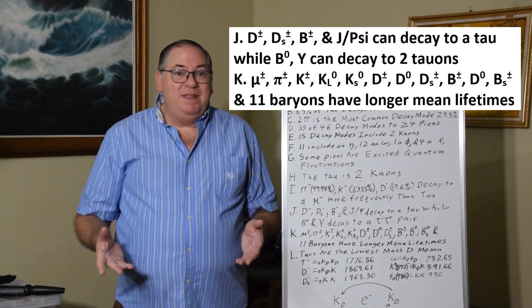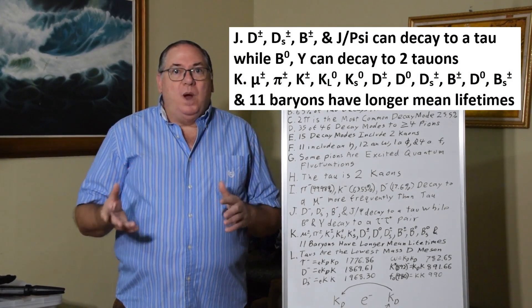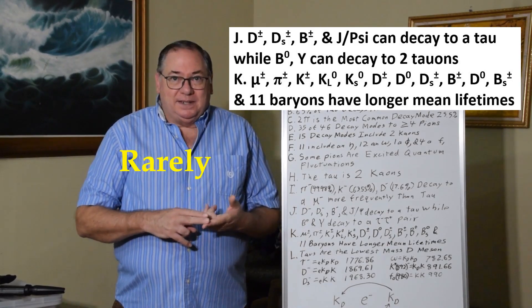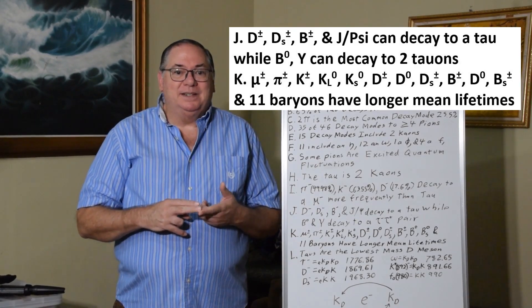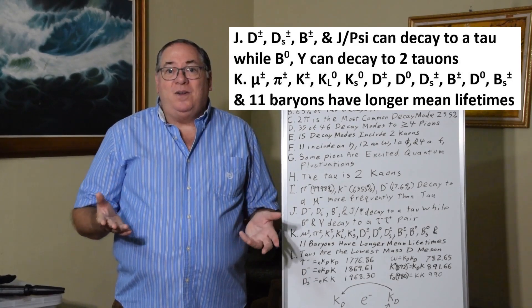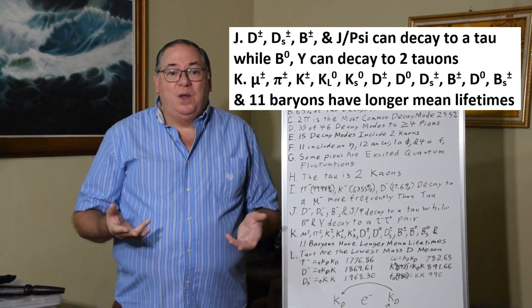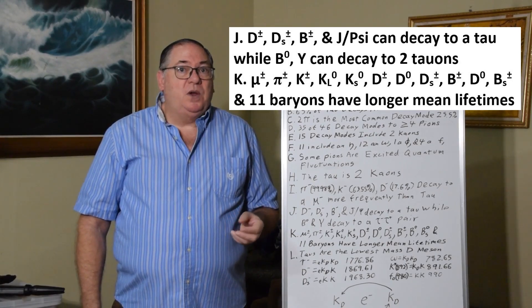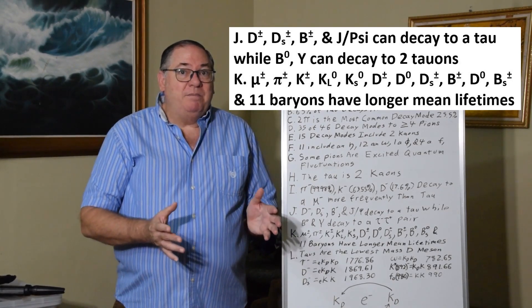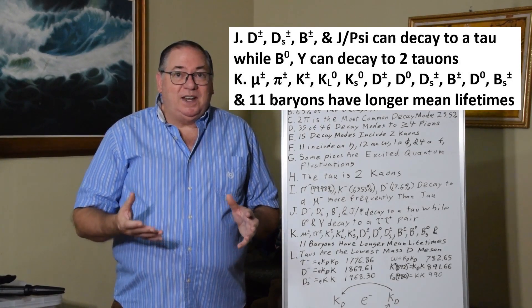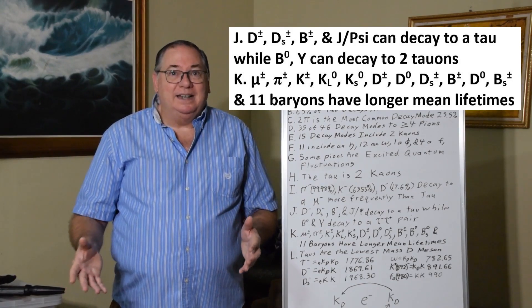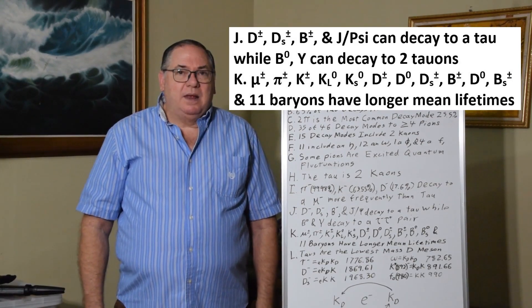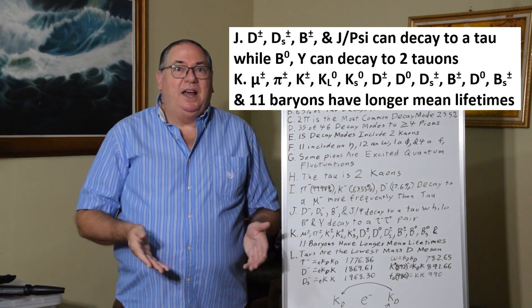Now, we also can look at it the other way around. That what other particles decay to a tau. A D meson, a strange D meson, a B meson, a J psi, all can decay to a tau, while a B or an epsilon can decay to two taus. So, taus can come from mesons, which means a tau like resonances inside some of these mesons, or they're related in some way. Which, once again, strongly suggests that a tau is just a meson.